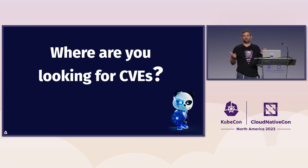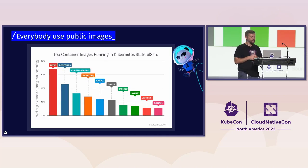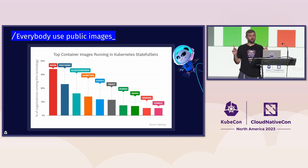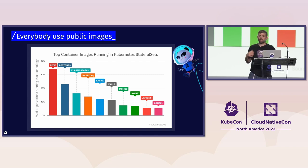When today we are looking for CVEs, looking for vulnerabilities, how do we do that? Many of us are using different public images. These public images are very frequently used in many organizations. I'm sure that you know all the names here — they are very widely adopted. We are scanning them for vulnerabilities to manage our security posture, but more importantly, to manage our security exposure.